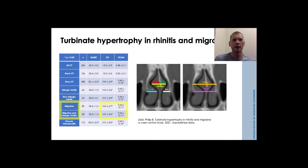In my practice, I also notice that patients with migraine presentations tend to show turbinate hypertrophy similar to that seen in inflammatory conditions like allergic rhinitis, and that patients who have both migraine and allergic rhinitis have the worst turbinate hypertrophy. This is unpublished data, but a pattern I consistently notice.